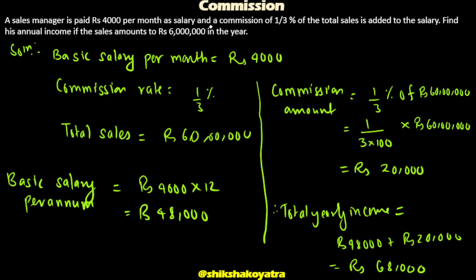We need to find his annual income. The total sales amount to ₹6 million, which is ₹60 lakhs, in the year. The basic salary is ₹4,000 per month and the commission rate is 1/3% of total sales.